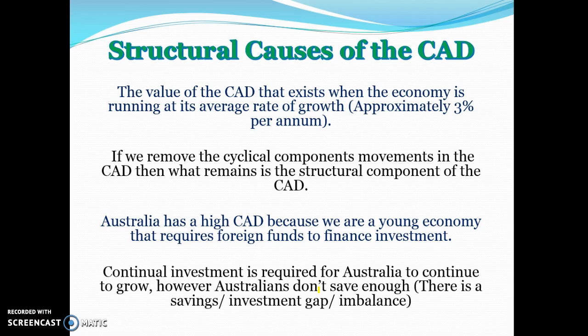The structural CAD is basically the CAD that exists when the economy is running at around its average growth rate of around 3%. It's the CAD that's not related to the level of demand in the economy — it's related to the underlying factors that cause the CAD to go up and down once we remove the cyclical component.